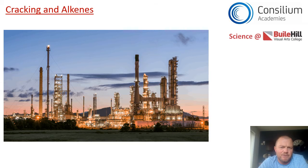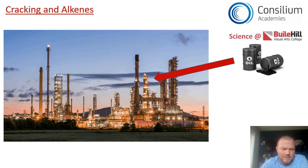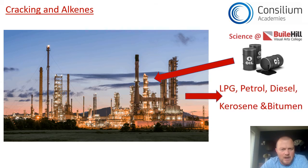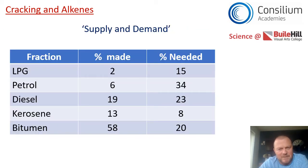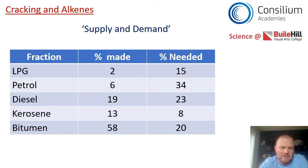Let's think about fractional distillation for a second. It takes place in an oil refinery, and its purpose is to separate crude oil into alkanes like LPG, petrol, diesel, kerosene, and bitumen. But there's a problem — a problem of supply and demand. It's a bit like arriving at a buffet where all the chicken legs are gone but the salad is still there. The supply doesn't match the demand.